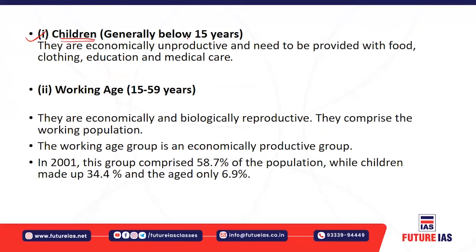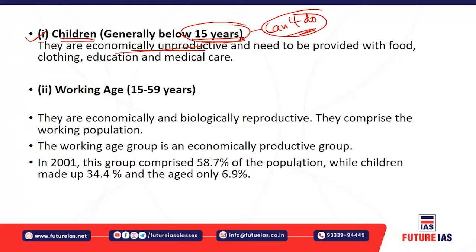The first category is children — those below the age of 15 years. Children cannot do productive work like adults, so they are economically unproductive. At that age they do not have the required skills to perform a particular task. Rather than being economically productive, they are dependent on their parents or guardians for food, clothing, education, and medical care — they are a dependent category.